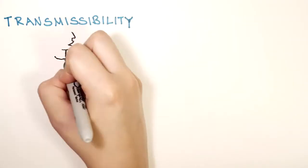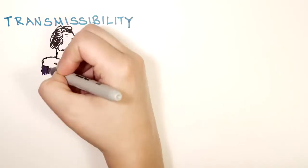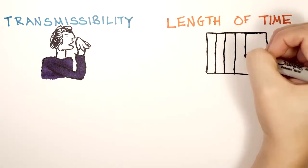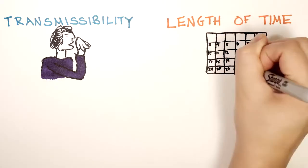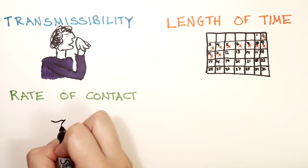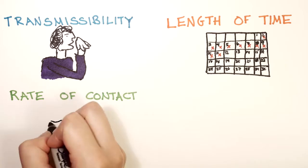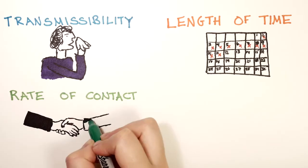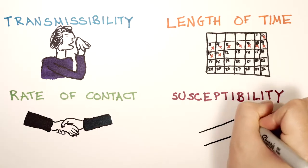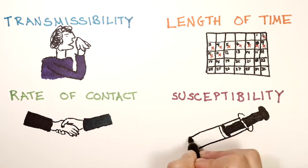Here are the four main factors they think about first. How easy is it to get infected? This is also known as transmissibility. How long is someone infectious? How often do infected people come into contact with susceptible people? This is also known as the rate of contact. And how many people in the population are susceptible to the infection.